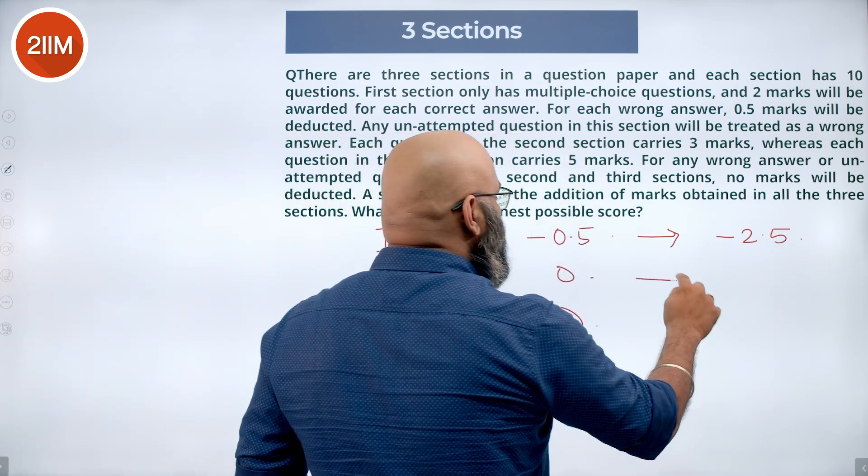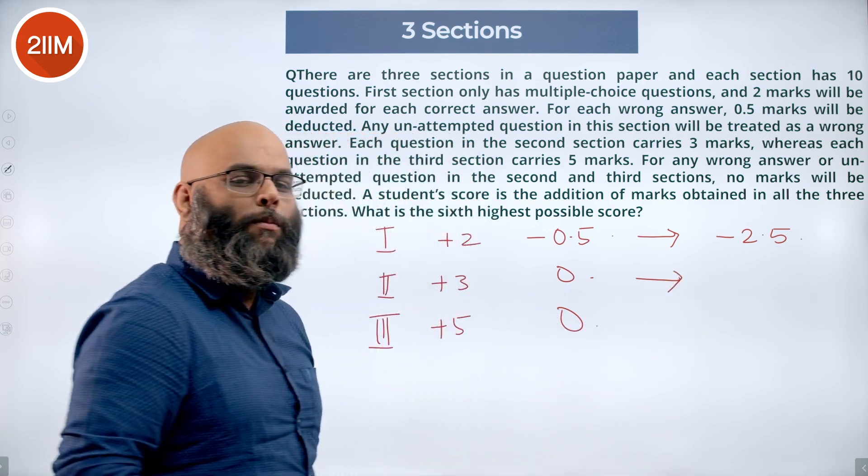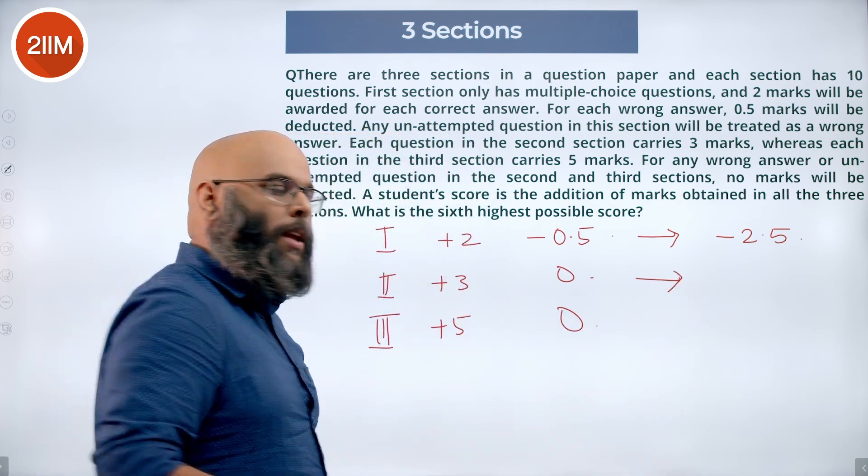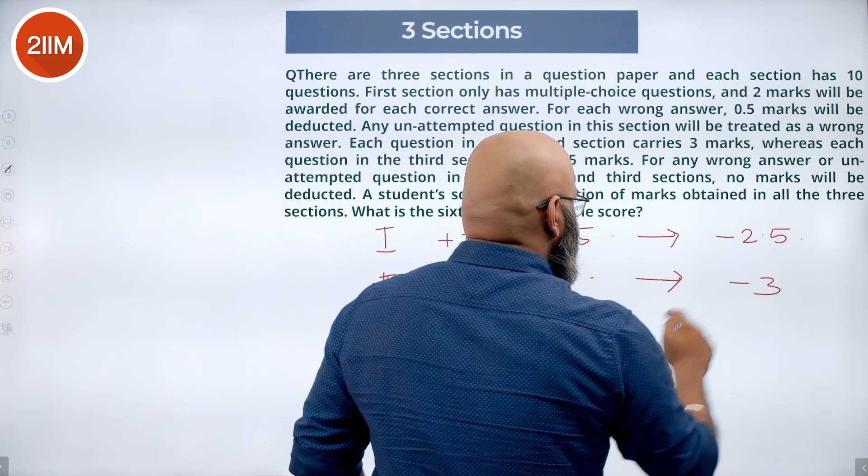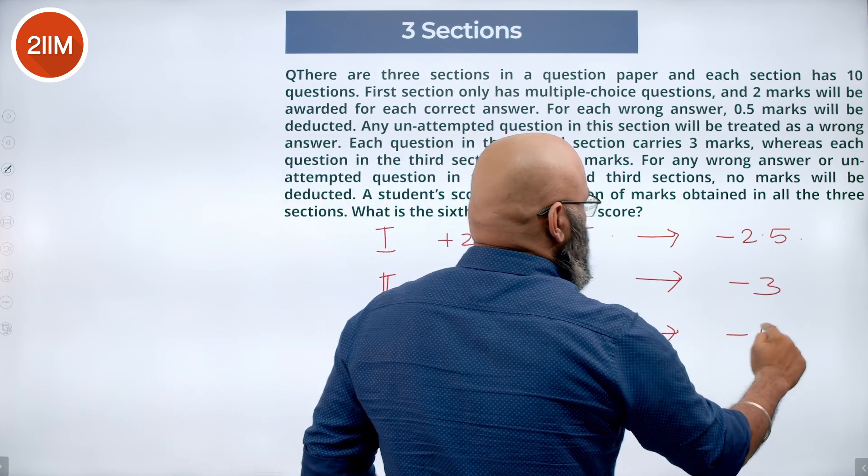Similarly, in the second section, you are not having any negative marking here, but you technically miss out on these three marks. The third case is going to be minus 5, similarly.